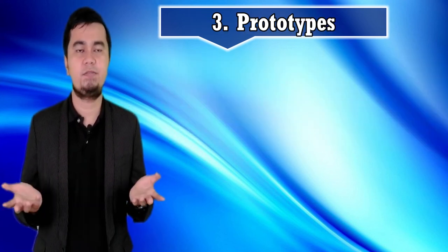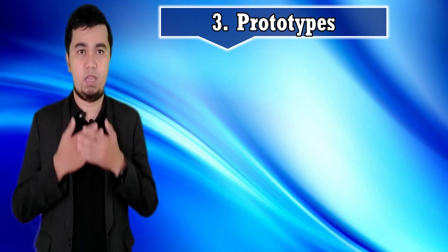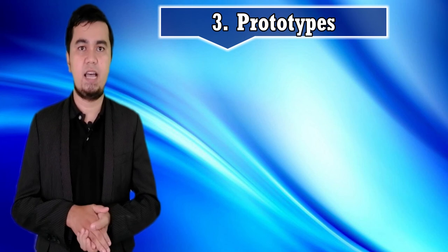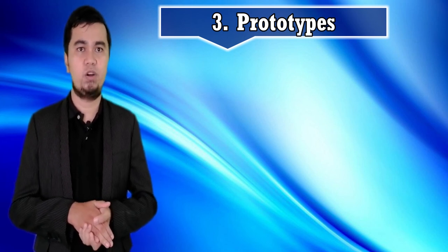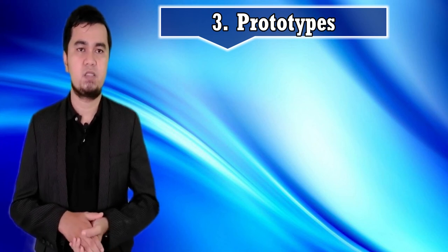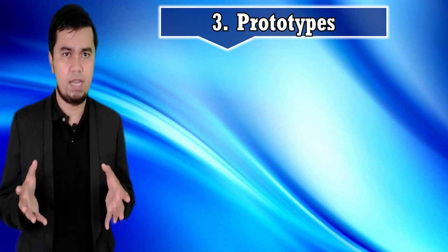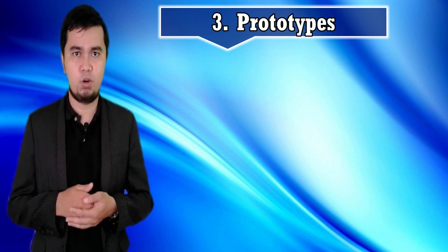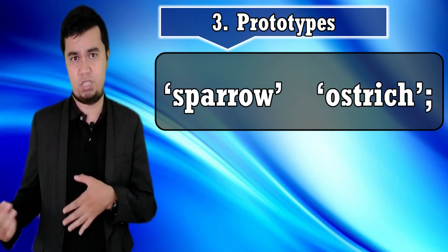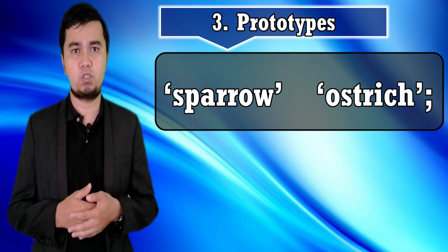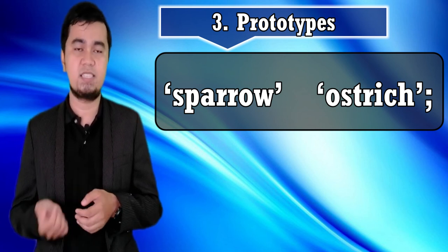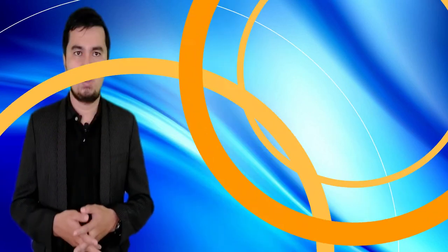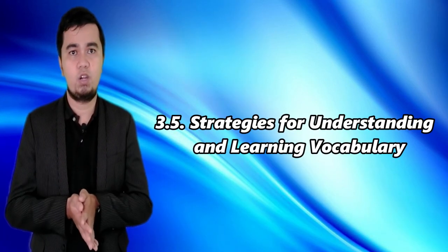Finally, prototypes: some aspects of meaning cannot be split up into components but are taken as a whole, according to Eleanor Rosch's prototype theory. An English person asked to give an example of a typical bird is more likely to say 'sparrow' than 'penguin' or 'ostrich.' Sparrows are closer to the prototype for birds in the mind than penguins or ostriches. In general, words have many different kinds of meaning — whether sharing general components, linked in lexical relations, or related to prototypes and levels.